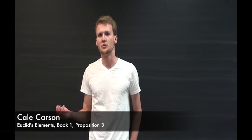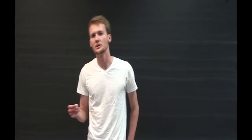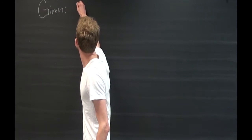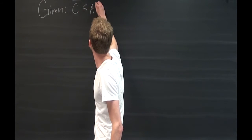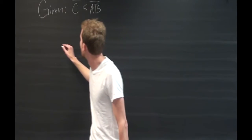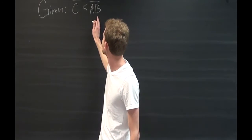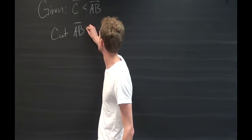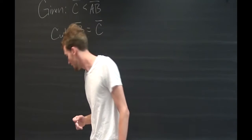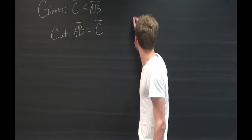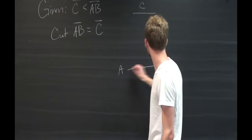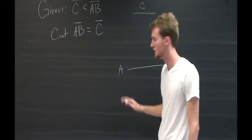I'm going to be presenting Proposition 3 of Book 1 of Euclid's Elements. We show this proposition given that line C is less than line AB, and we're going to set out to cut line AB such that it's equal to C. To do this, first we're going to take our line C and then our longer line AB. So those are our givens.